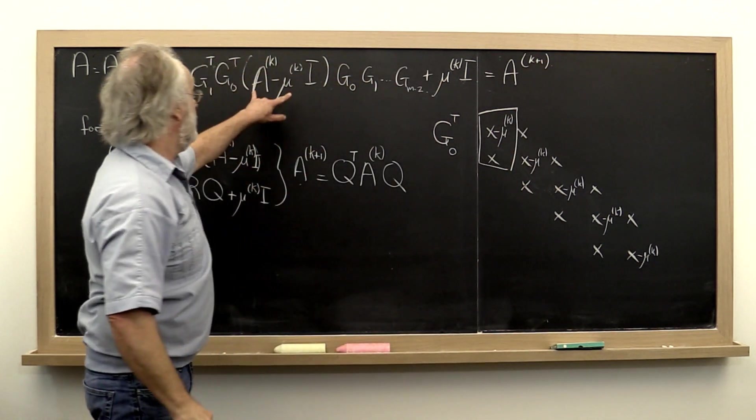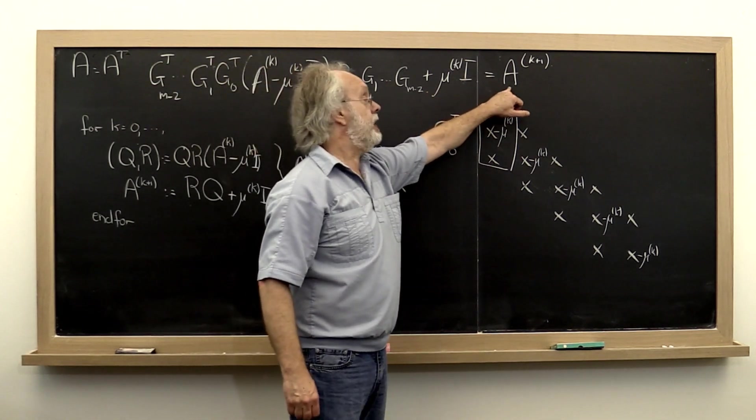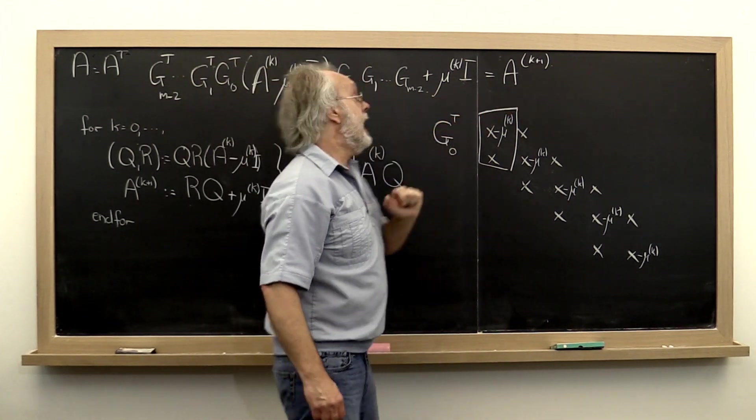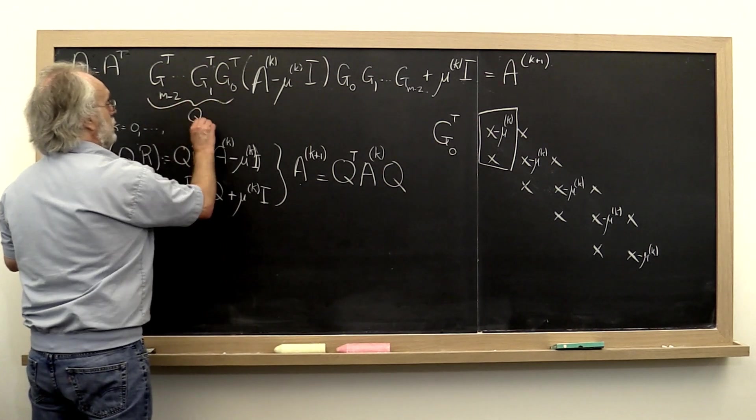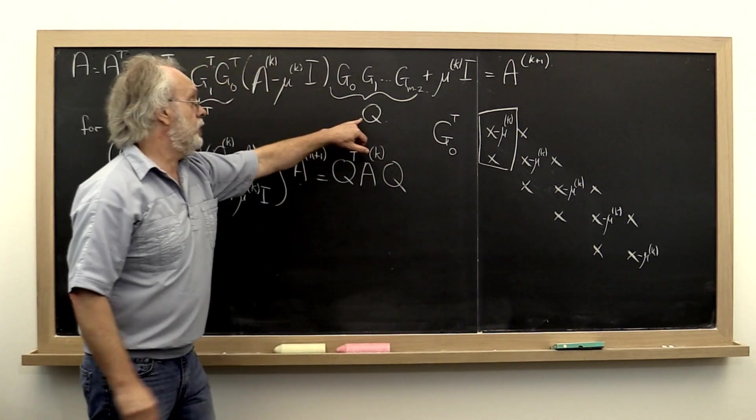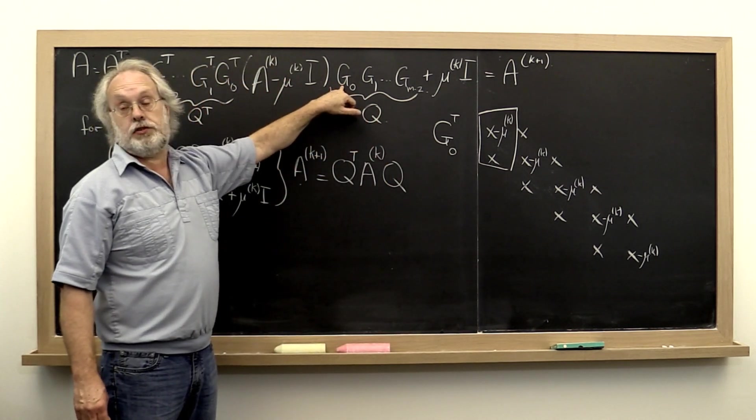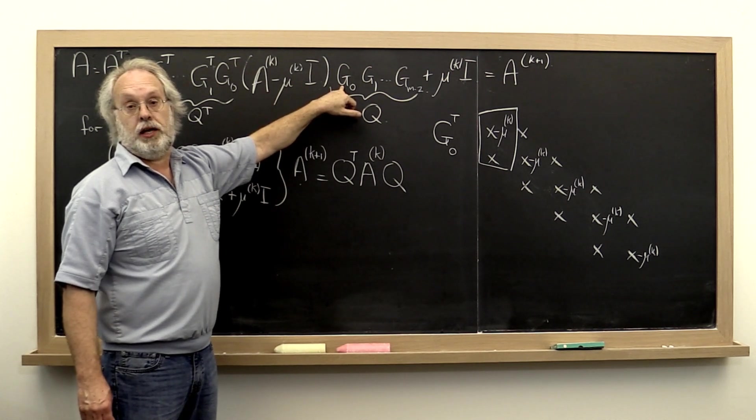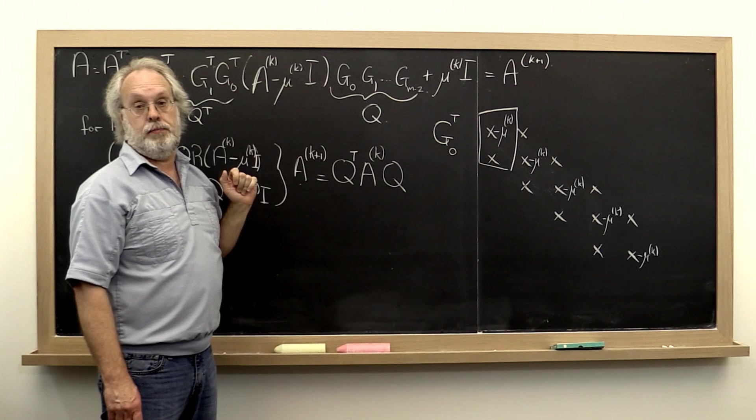Now we know that this matrix is tridiagonal. We know that this matrix is tridiagonal. And we know that this matrix Q is uniquely determined by this first Givens rotation, because only its entries end up in the first column of it.